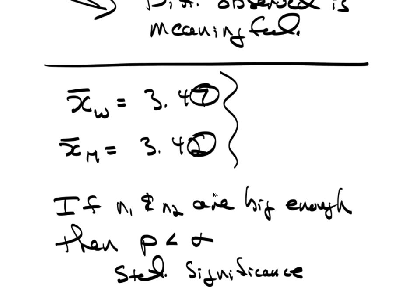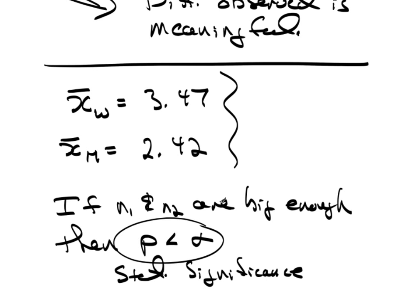On the other hand, let's change this for a moment. Let's pretend that the men's GPA is 2.42. That's a little more than a full grade point difference. That's significant — this is a mid-C and that is a mid-B. That would be important. So if the p-value is smaller, it would be worthwhile to ask why.